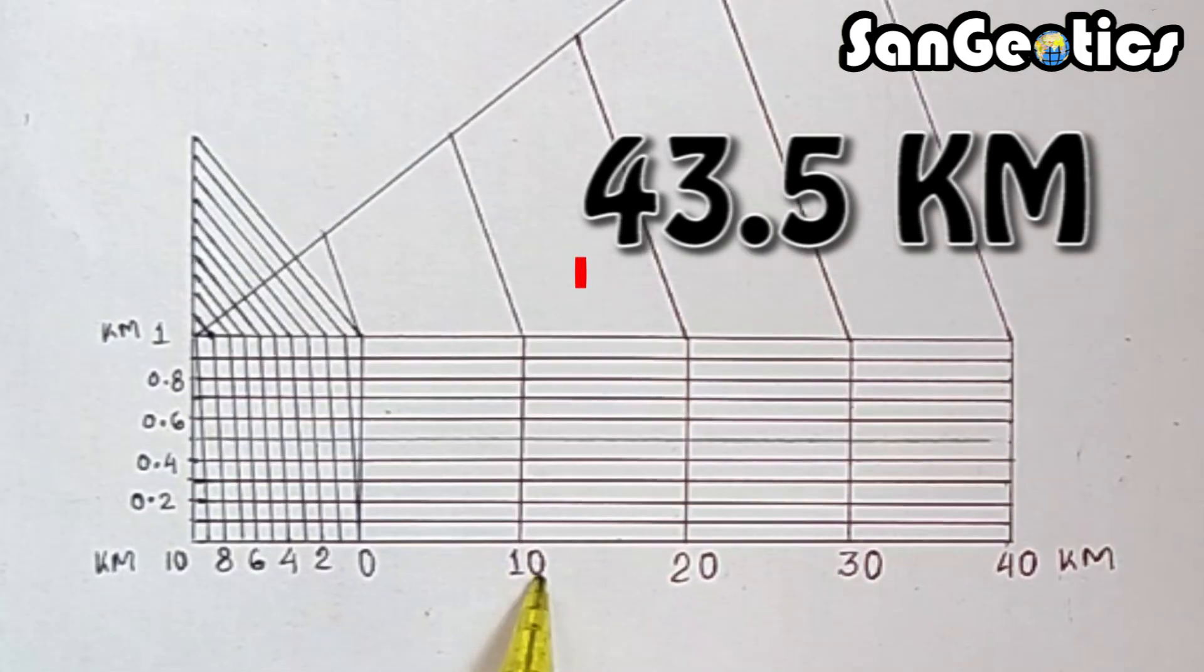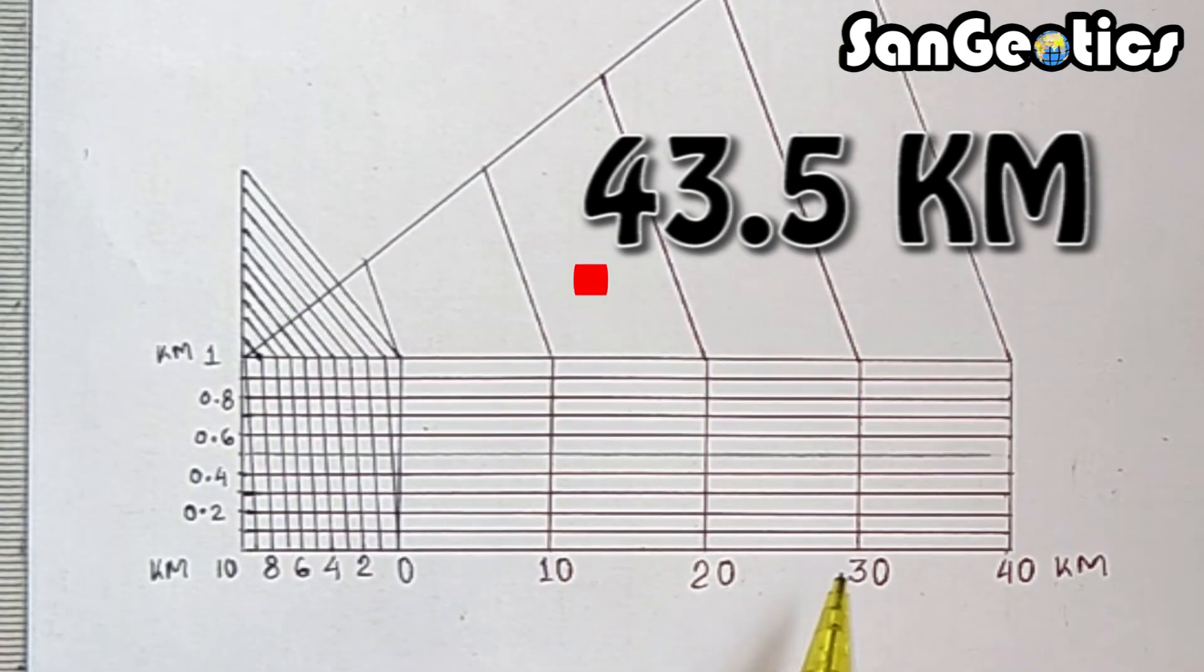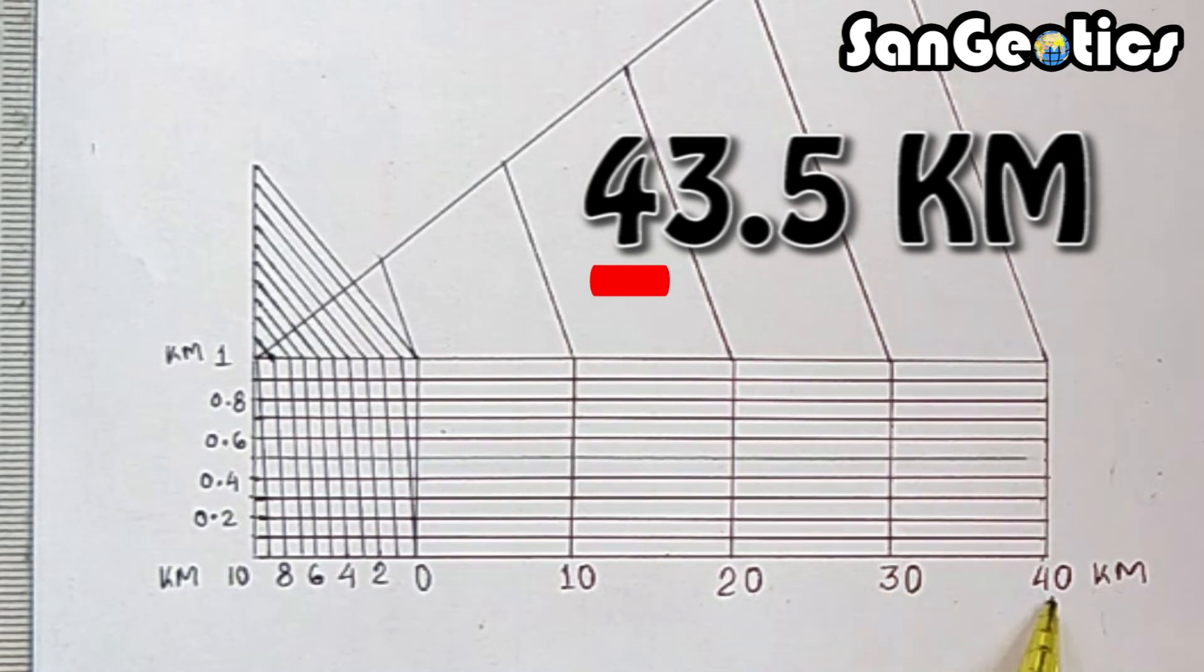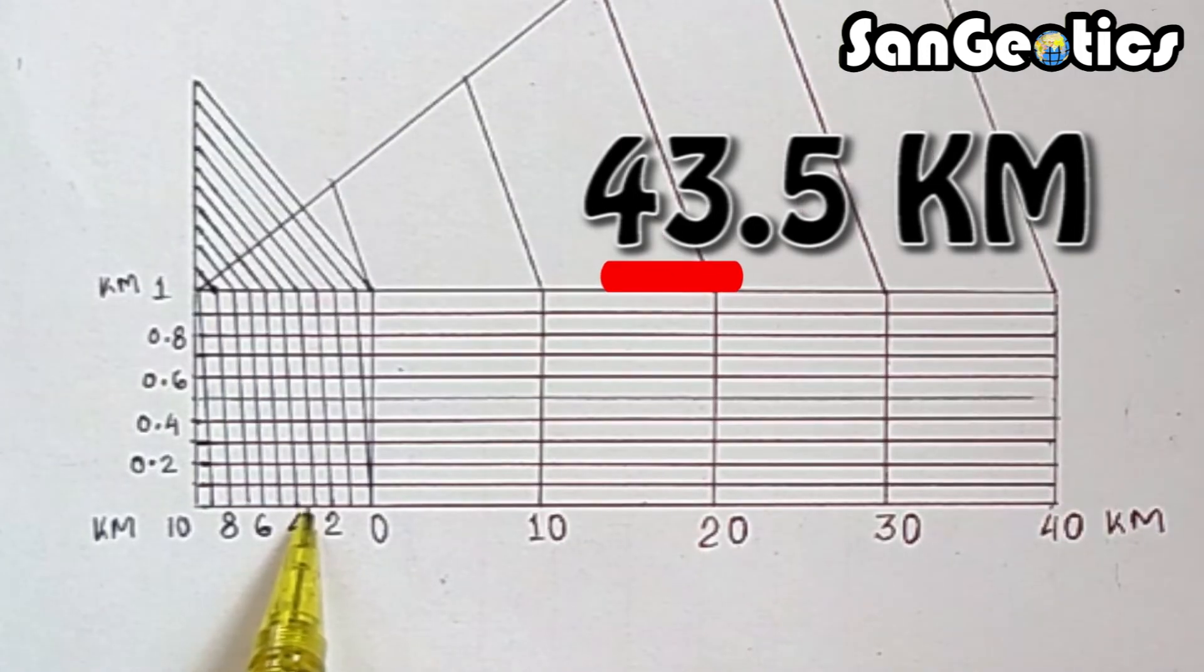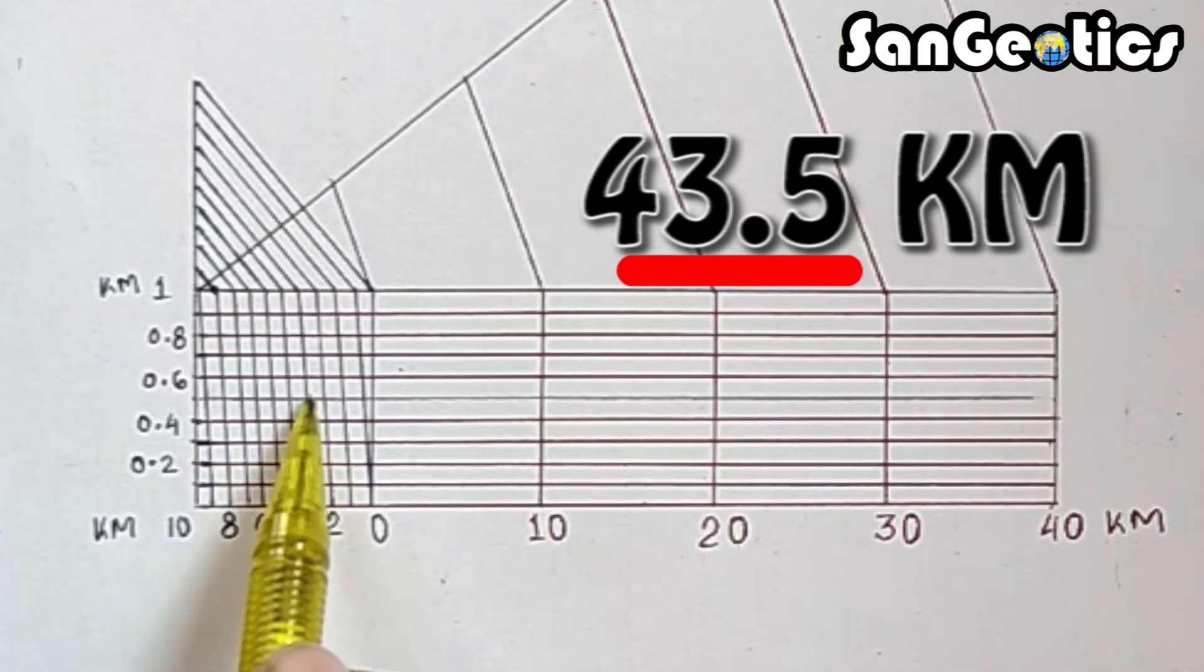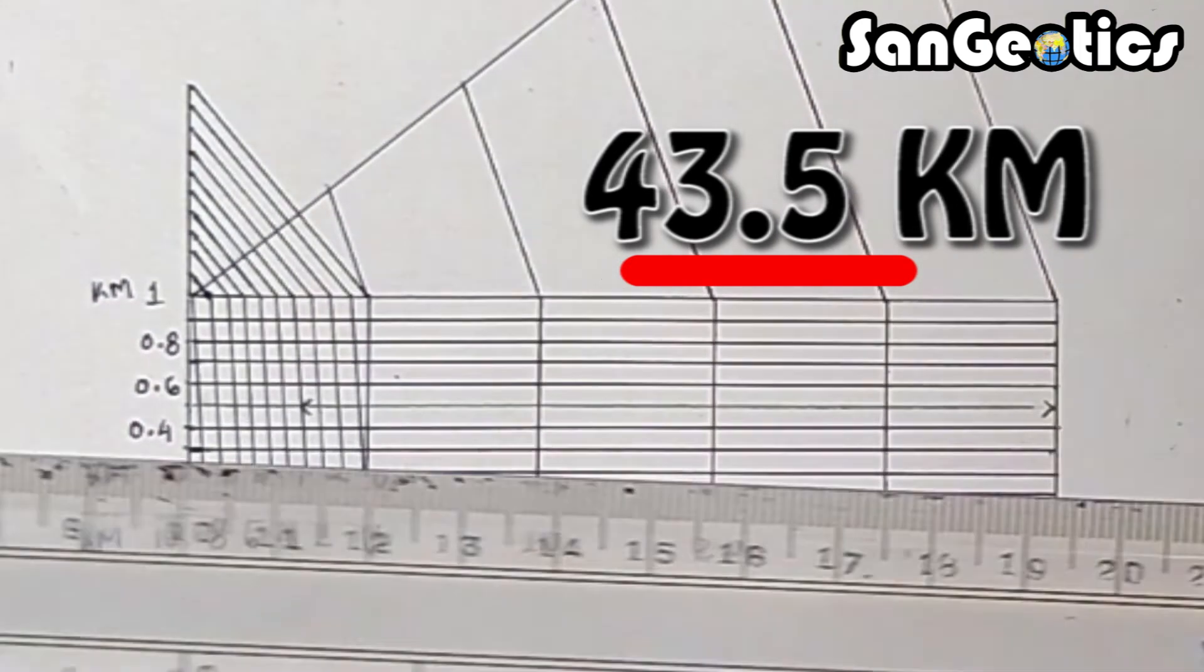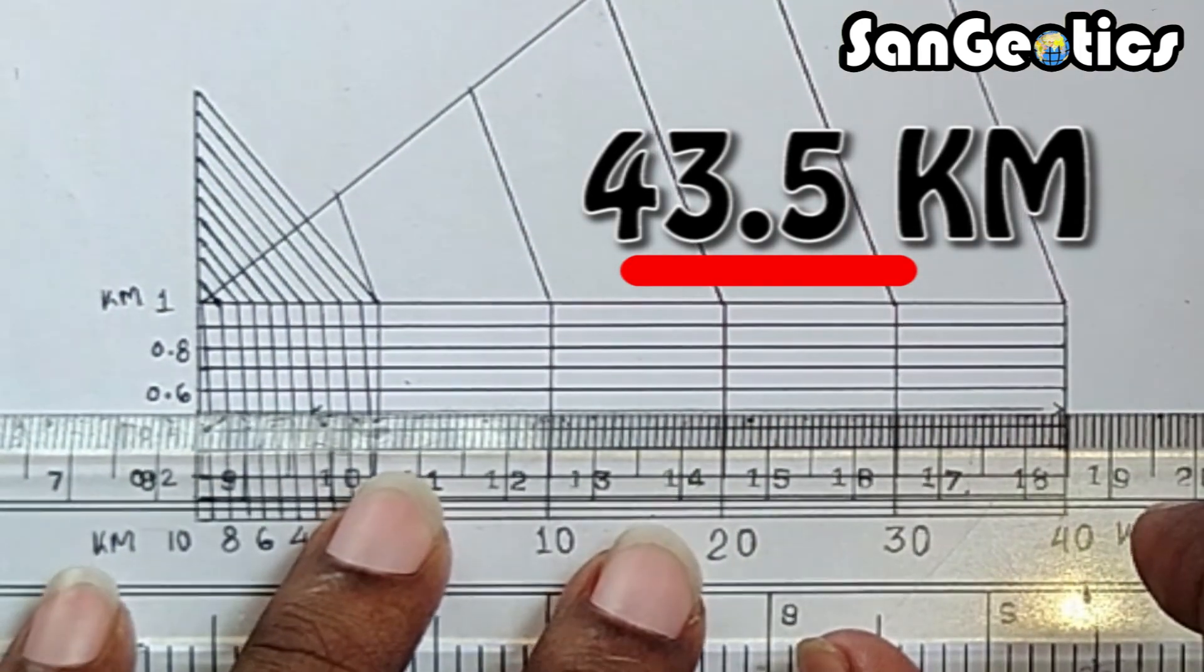This is 10, 20, 30 and 40 km and this is 1, 2 and 3 and this is 0.1, 0.2, 0.3, 0.4 and 0.5. So, this line is represented 43.5 km.